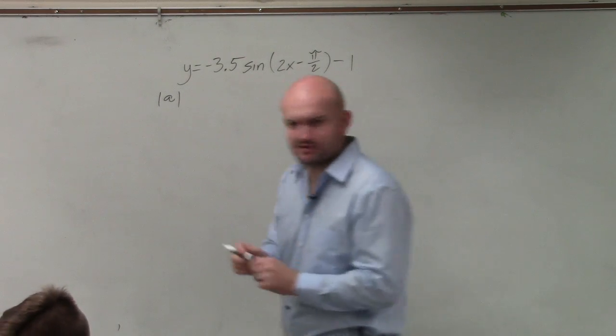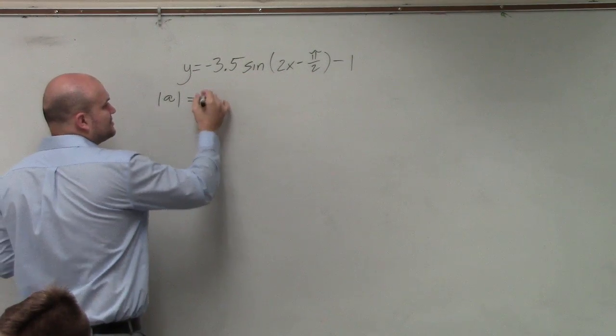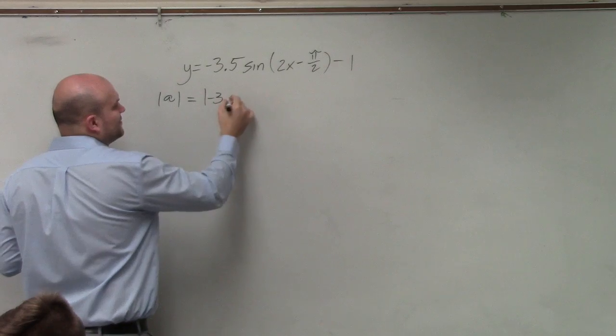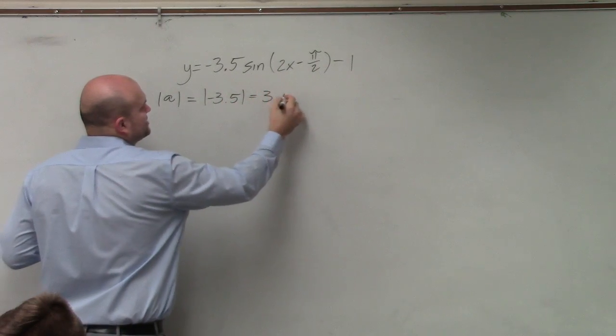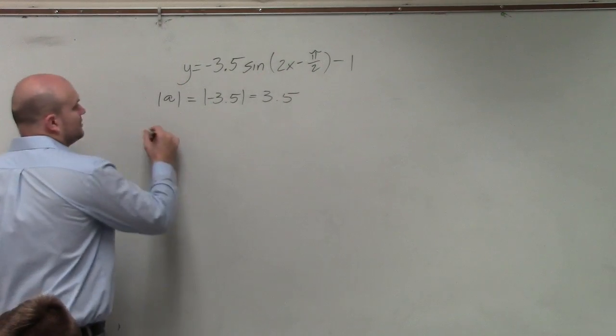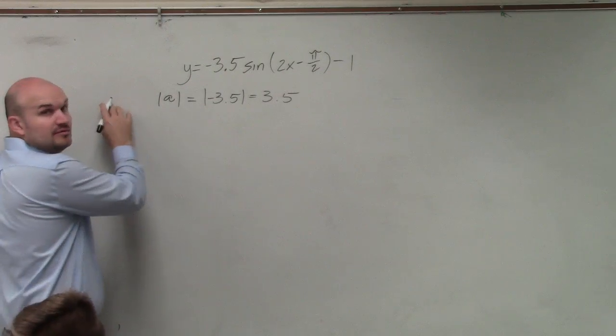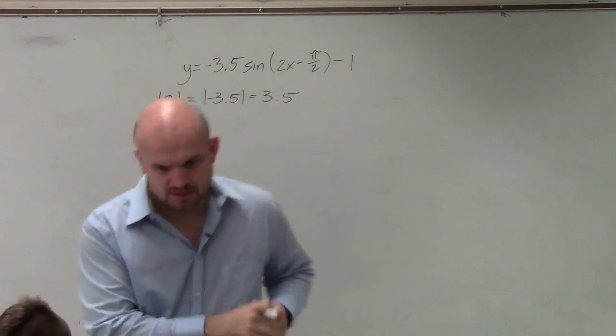The absolute value of A is your amplitude. Therefore, it's the absolute value of -3.5, which is 3.5. That's your amplitude. The next thing is to find the period.